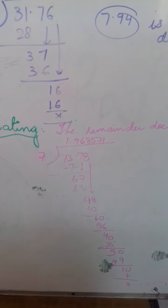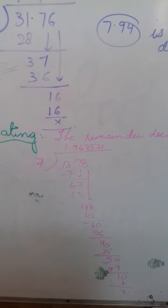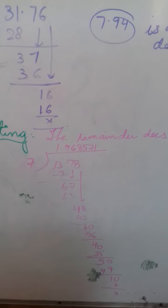So, 7 will come down. 7 9s are 63, 4 is left. Then 8 will come down. 7 6s are 42, then 6 is left. Then 0 is there.